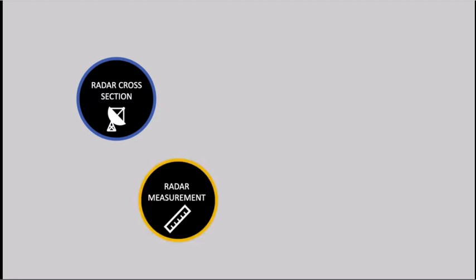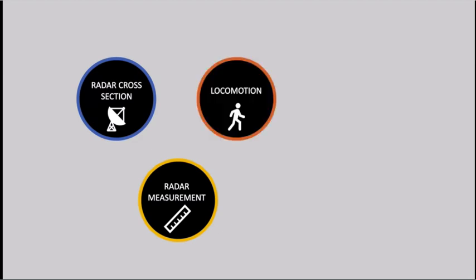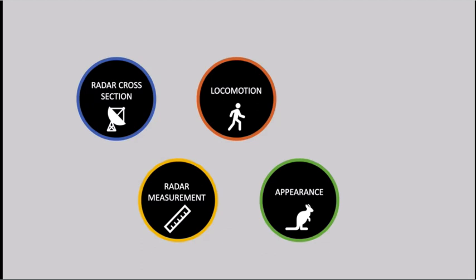The project had five objectives: radar cross-section to replicate how detectable the kangaroo is to a radar, radar measuring station which logs and allows us to compare radar data, locomotion to replicate the motion of a kangaroo, appearance to replicate size, shape, and color, and robustness to create a modular and repairable design.